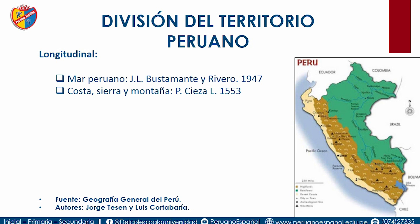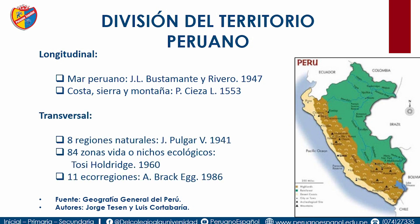La otra división, muy conocida, es la transversal o altitudinal. Ahí encontramos las 8 regiones naturales, las 84 zonas de vida y las 11 ecoregiones. ¿Quién lo plantea? Ahí tenemos a Javier Pulgar Vidal, a Tosi Holdrich y a Antonio Braj.